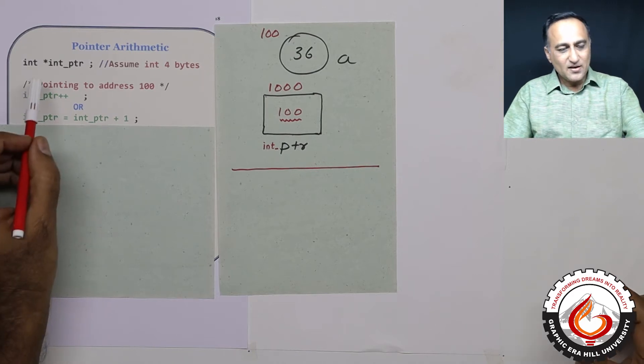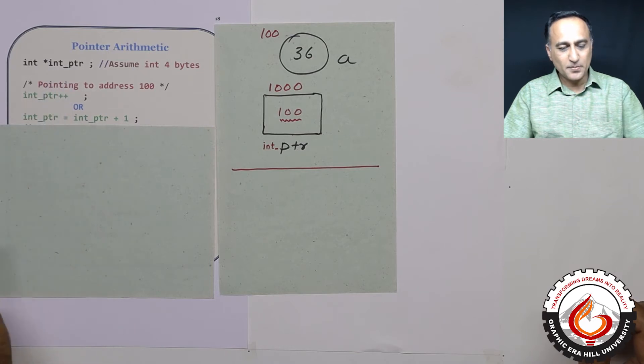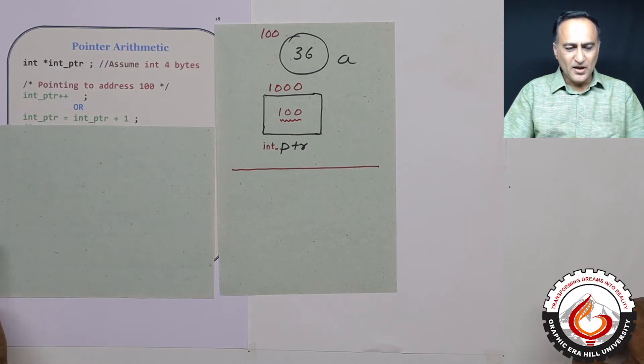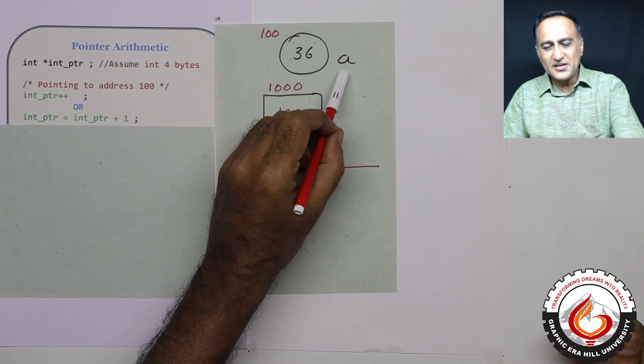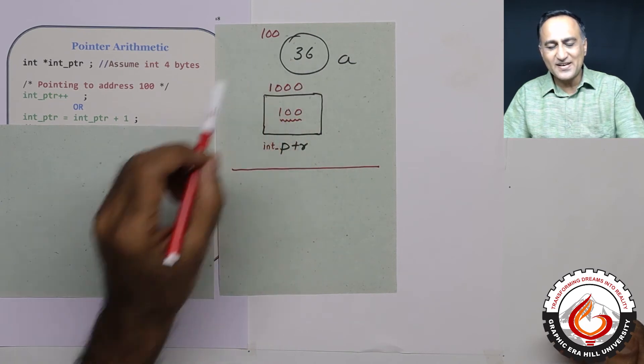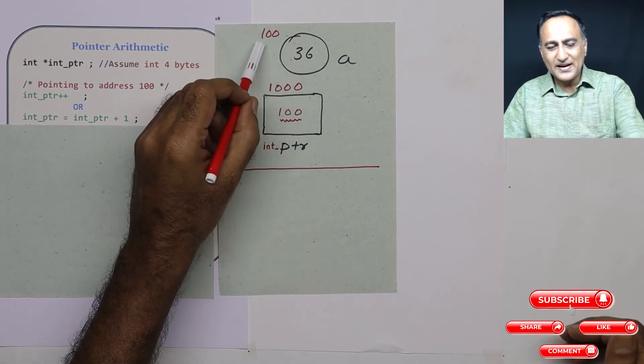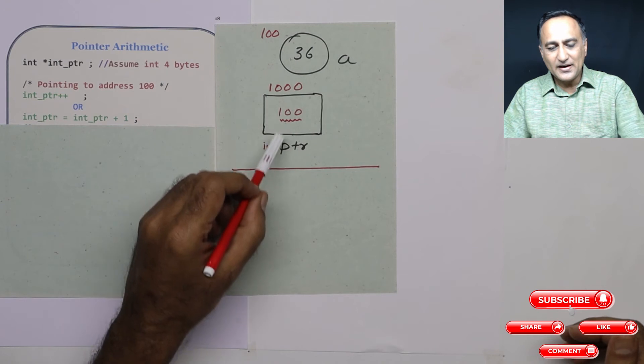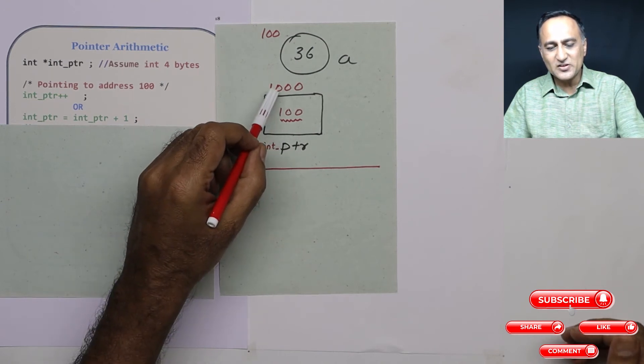So let us say I have an integer pointer whose name is star int underscore ptr. Assume the size of int on my machine is 4 bytes. I have declared an integer variable a with the initial value 36 and residing at address 100. Now what I am doing is I am copying the address of this variable a into this int pointer 100. Int pointer itself has an address of 1000.